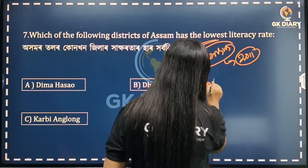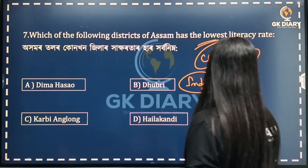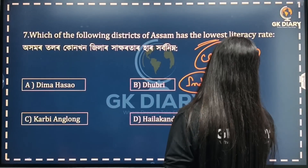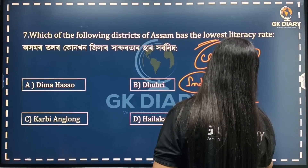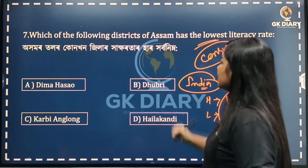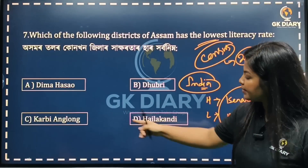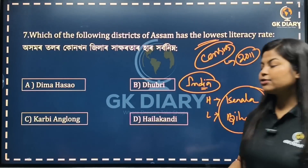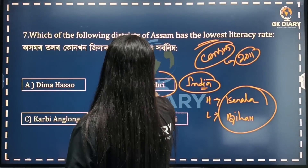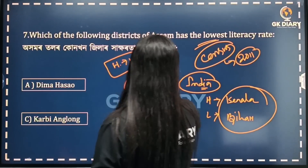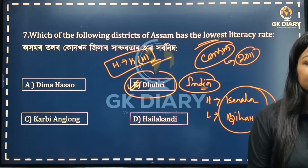So this question relates to India and Assam. The highest and lowest literacy rates — how do you check them? Based on the 2011 census, the lowest literacy rate district in Assam — the correct option is given.